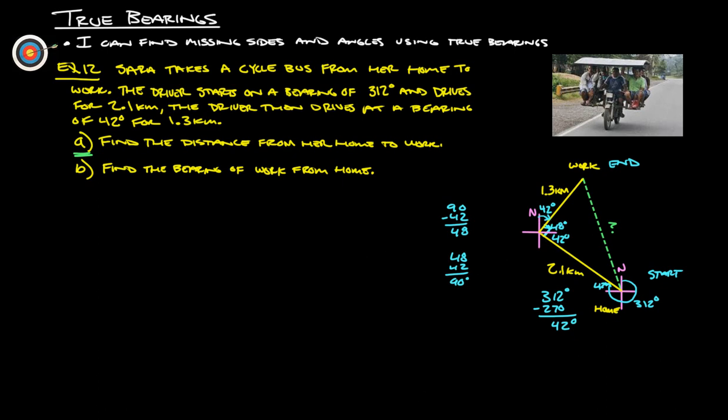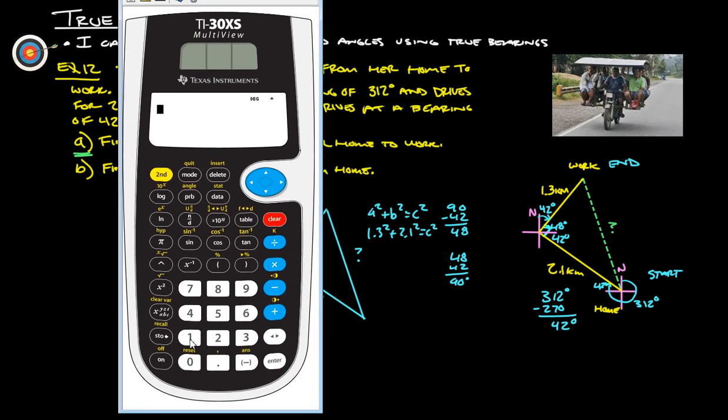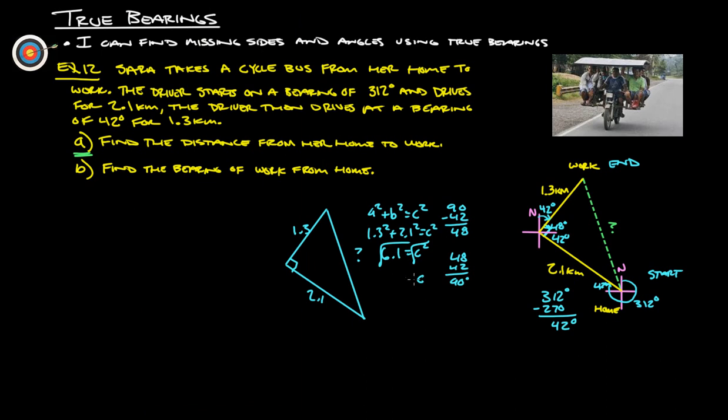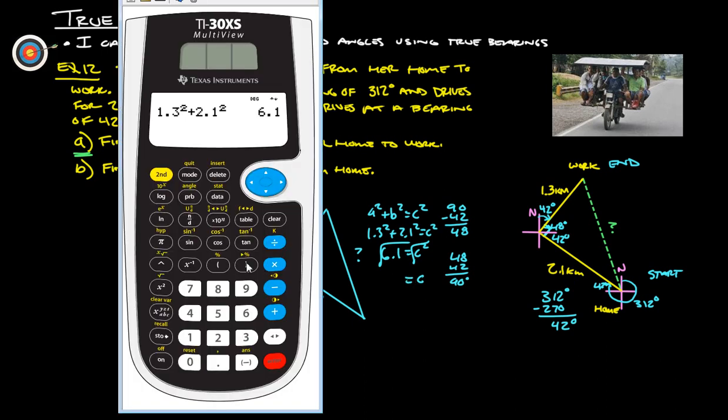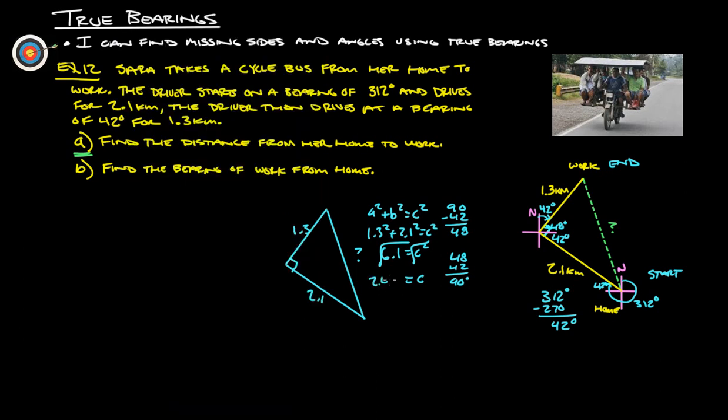Now, if we look at this triangle here, we got a 90 degree angle. We can do a squared plus b squared equals c squared. So 1.3 squared plus 2.1 squared is going to equal our c squared. 1.3 squared plus 2.1 squared gives us a total of 6.1. So 6.1 is what c squared is. We square root both sides and that will tell us how far away from home she is. Square root of our answer and we get 2.469. So we'll go with 2.47 kilometers.